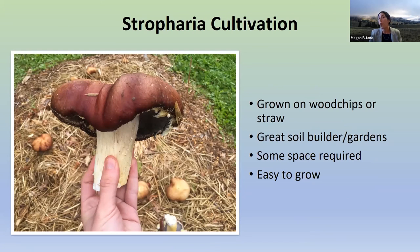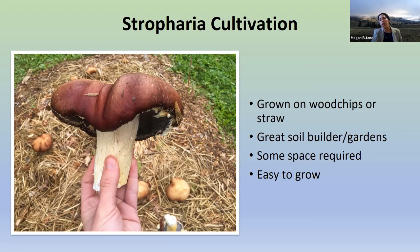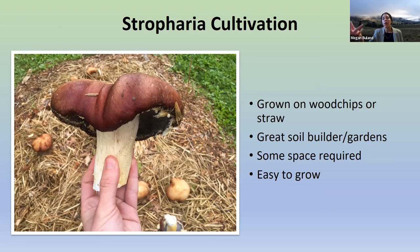There's also stropharia, or wine cap mushrooms — another beginner-friendly species. They grow really well on wood chips and straw. All you need to do is take the spawn from a reputable source and inoculate that substrate in the fall or early spring. If you inoculate in the coming spring, you should see a flush of stropharia mushrooms by the following fall.